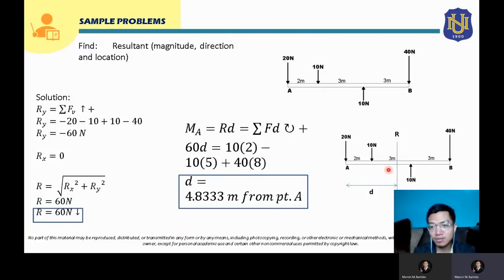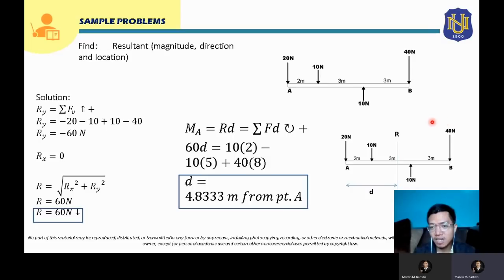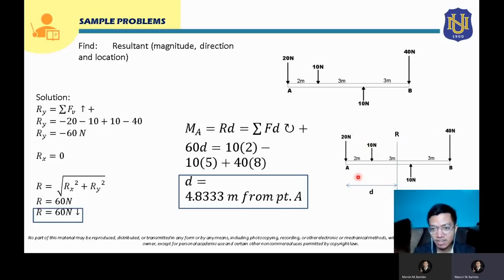You should also check if the location is logical. Since the 40 N force is the largest and is located on the right side, it makes sense that the resultant is pulled toward the right — approximately 4.833 m from A. It would not be logical for the resultant to be located near the leftmost part of the system given the dominant 40 N force on the right.